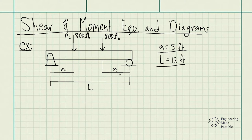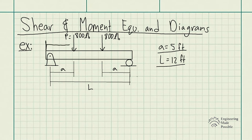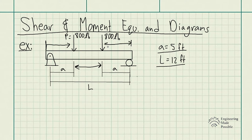Just as in the previous video, every time we want to look at the internal forces within a specific section of the beam, we split up the beam. The difference here is we're going to split it up based on where the external forces or moments are being applied. So we'll split from the start to the first external force P, that will be the first section, then the middle section, and finally the last section through to the end.